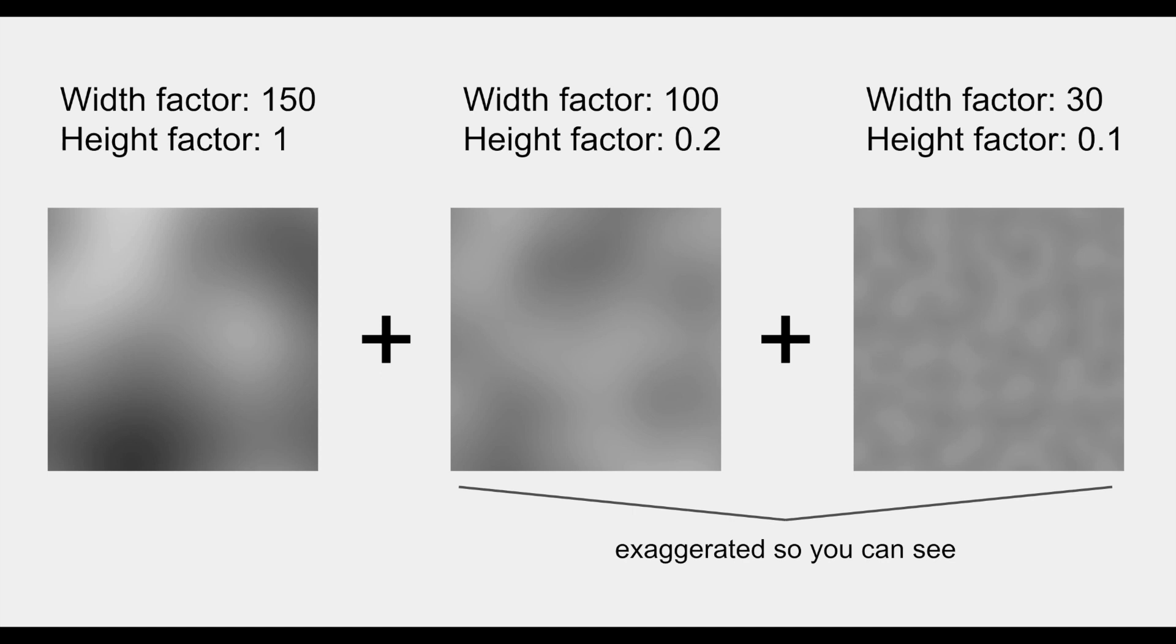The widest one has a width factor of 150. In my project, this means that 150 squared Perlin noise calculations are made inside each grid square of this first layer. We'll cover grid squares later. For comparison, the second layer has a width factor of 100. The third has a width factor of 30, which is 5 times the bumpiness of the first one.